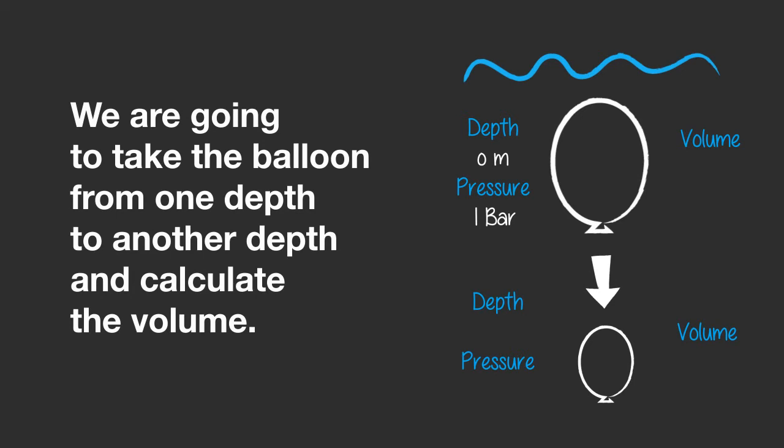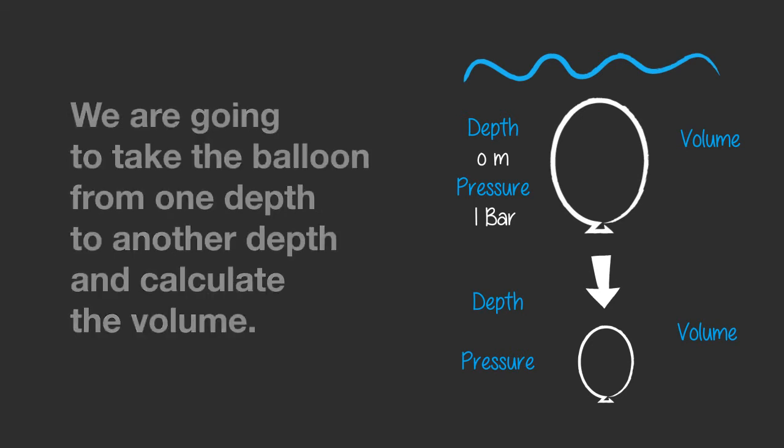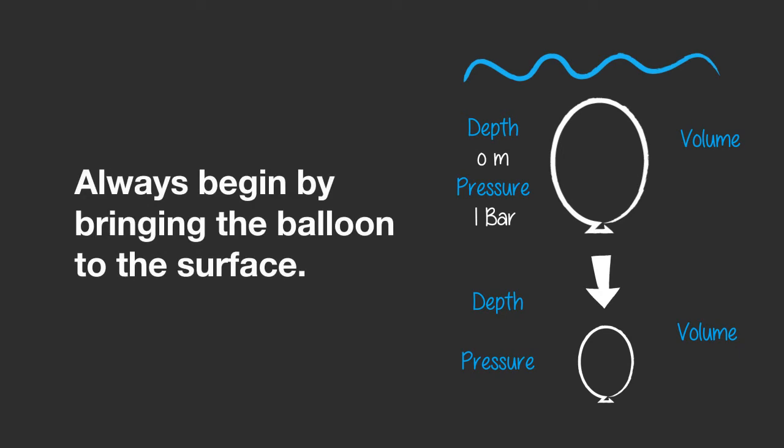Now we're going to take it one step further. We're going to take a balloon from one depth to another depth and calculate the volume. The trick is to always begin by bringing the balloon to the surface first. When you know the volume of the balloon at the surface, it's then easy to work out the volume at the second depth.